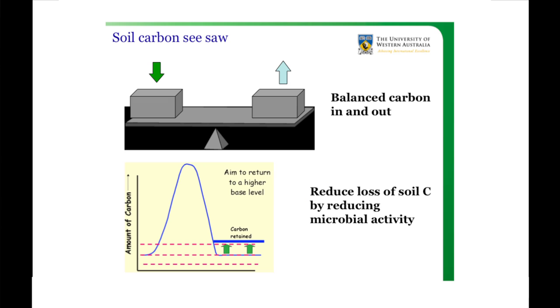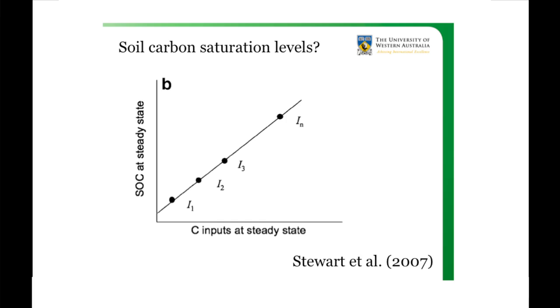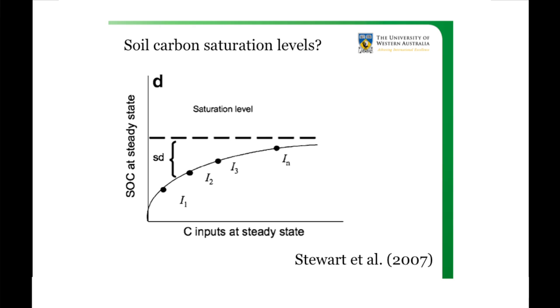To reduce the loss of soil carbon, you need to reduce microbial activity — and with soil biology we always think of increasing soil biology, but we need to actually control it as well if we're going to keep carbon in the system. The amount of carbon in soil will depend on soil conditions and management practices, but when you add carbon it will increase, then organisms will break it down and you'll lose it as CO₂. You want to retain more than you started with, and that's a challenge. There's probably a maximum level of carbon in each soil — a plateau you can't really increase beyond — and a lot of soil carbon models don't have this factored in.